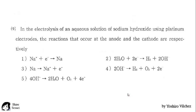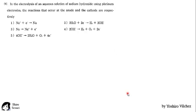Go to the last question, 9. In the electrolysis of an aqueous solution of sodium hydroxide using platinum electrodes, the reactions that occur at the anode and the cathode are respectively. In other words, we have to choose 2 alternatives. Let's go.